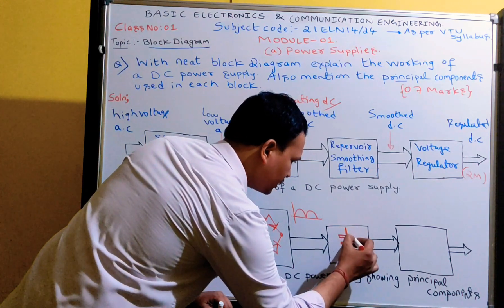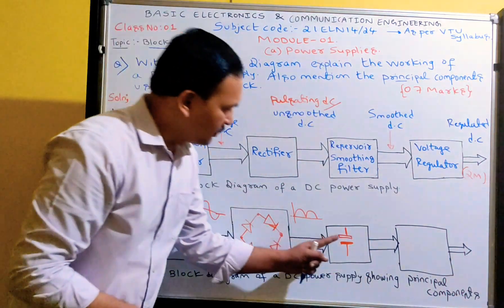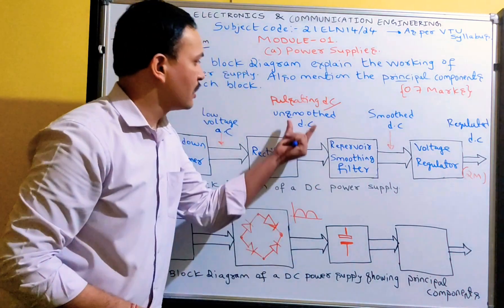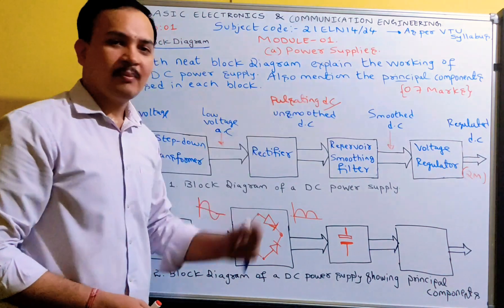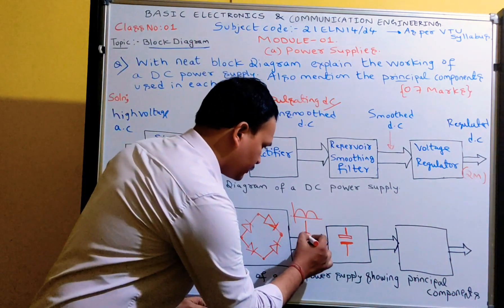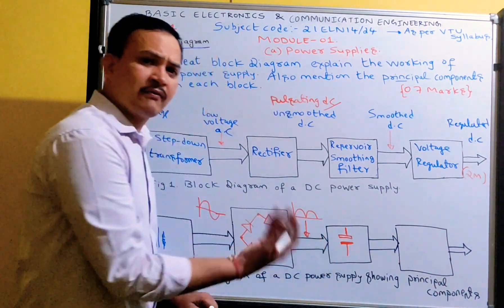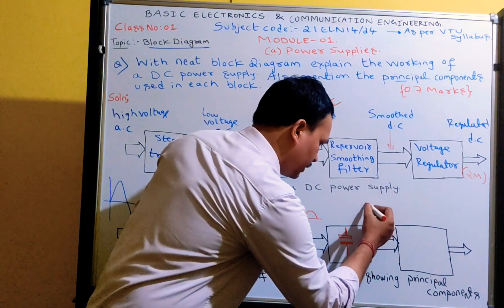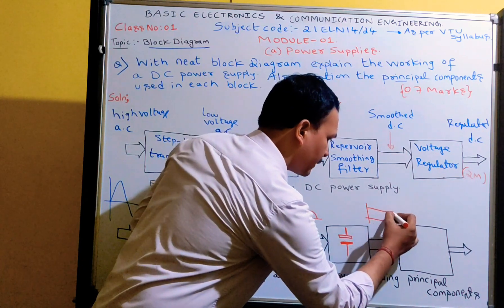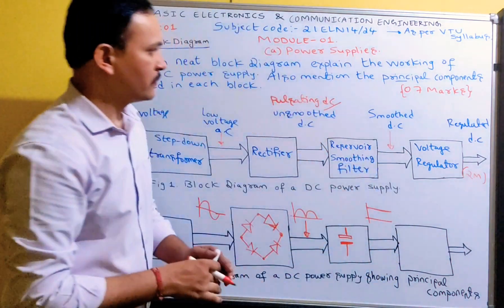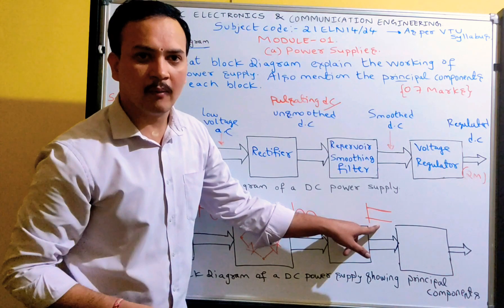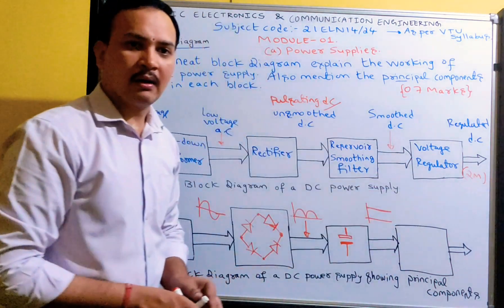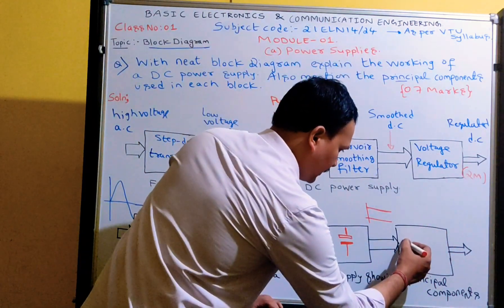The principal component is a capacitor. The input to the reservoir circuit is the pulsating or unsmoothed DC waveform. This waveform is given as input to the filter. If the capacitor value is very high, the output we get is smoothed DC. Smoothed DC means a much flatter waveform, and this smoothed DC voltage is then given to the voltage regulator.